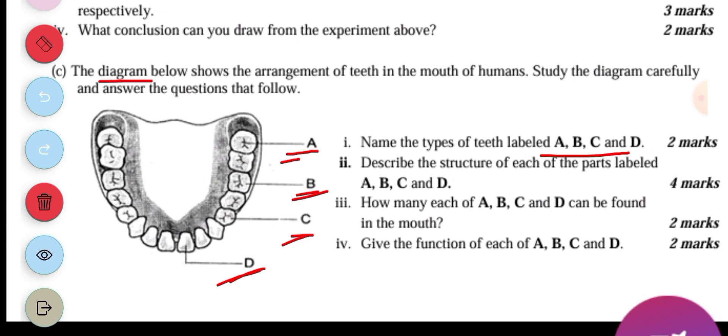D is the incisor. Now it says describe the structure of each of the parts labeled A, B, C and D.